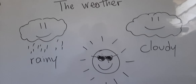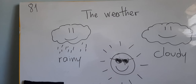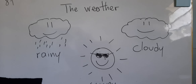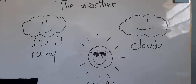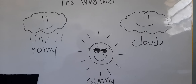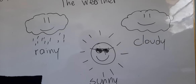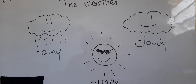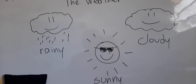Then we have cloudy. What is cloudy? Cloudy is when in the sky there is a lot of black clouds — nubes oscuras. So cloudy is nublado.